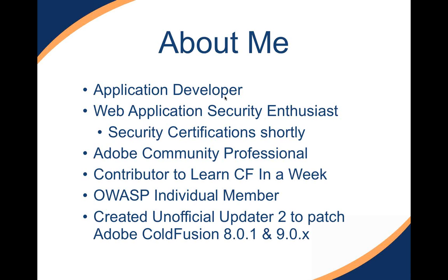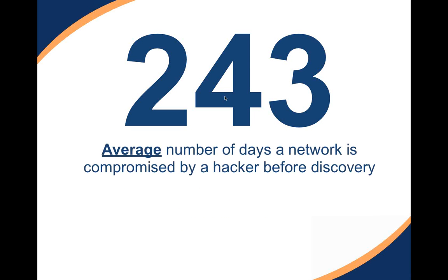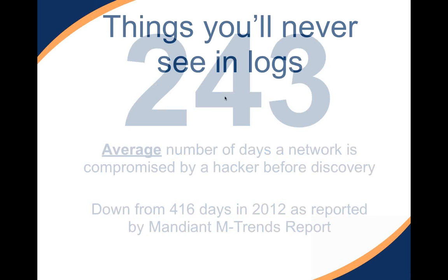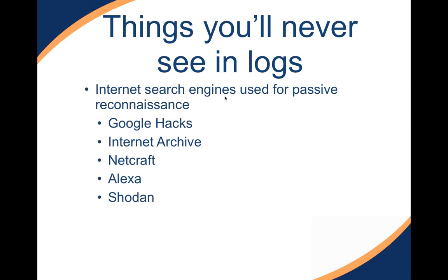I'm going to start off with a number: 243. The significance of this number is that it's the average number of days a network is compromised before a hacker is discovered. This has been reported by Mandiant, a security firm in northern Virginia, and it's actually down from 416 days in their previous report in 2012. It is an average — people can be compromised for a shorter period or for multiple years — but it's still a significant number.